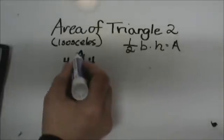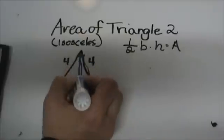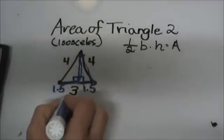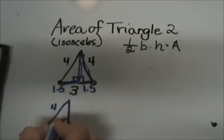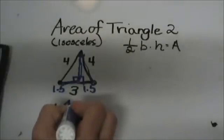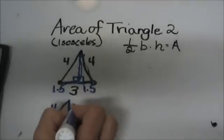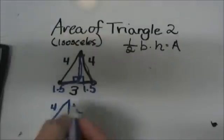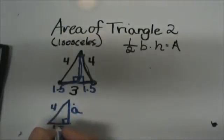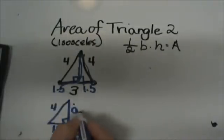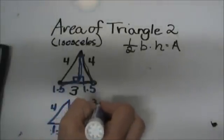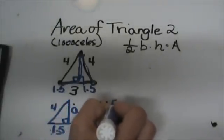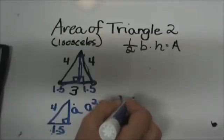Now I can use this right triangle to figure out the missing side. I am going to draw that below here — my hypotenuse is still four, but this leg is now 1.5, and we don't know the other leg, so I am going to call it A. Now I can use the Pythagorean Theorem: A squared plus B squared equals C squared. So A squared plus 1.5 squared equals 4 squared.